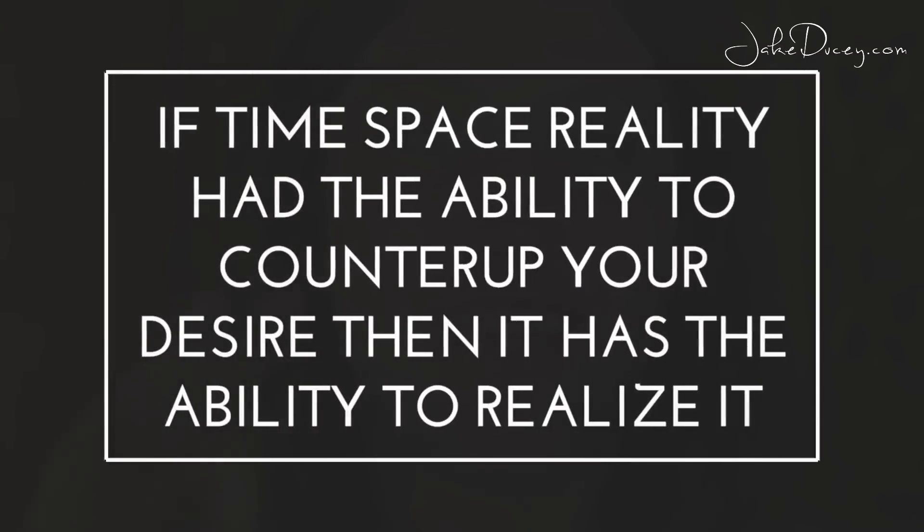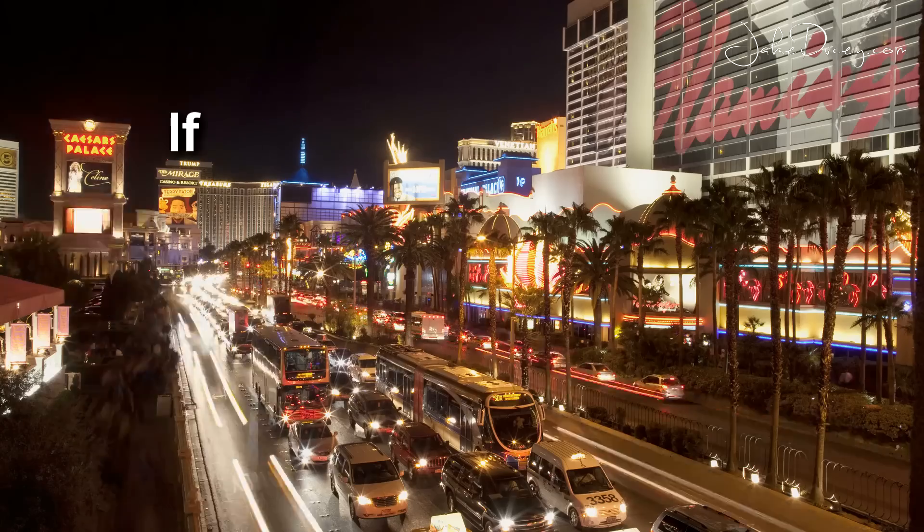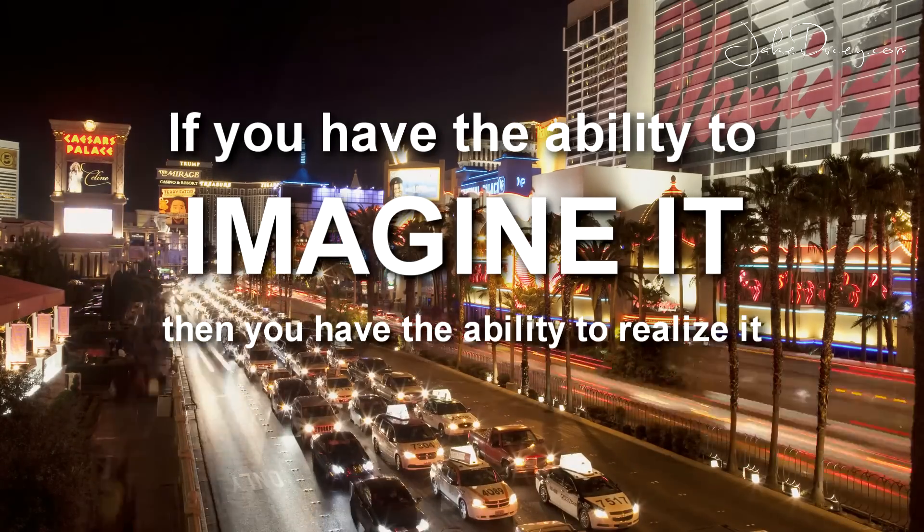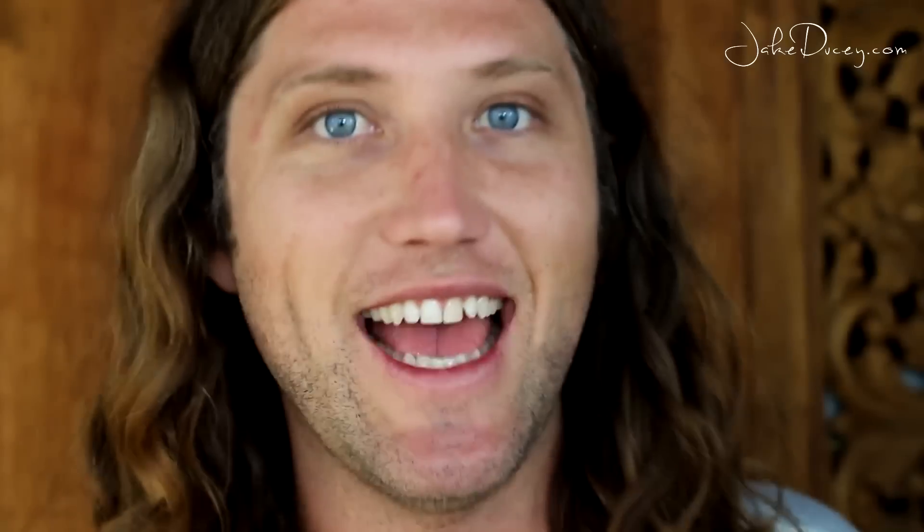Number three: if this time-space reality had the ability to conjure up a desire in you, then it has the ability to realize it. The seed doesn't exist without the ability to turn into a tree. The oak tree seed doesn't exist without the ability to turn into an oak tree. The seed of desire within you for your dream house, your soulmate, more money — Abraham tells us in Money and the Law of Attraction: if you have the ability to imagine it, then you have the ability to realize it. The basis of our entire universe is abundance. The only places there's really not abundance are things humans have created out of our egos. The universe in and of itself is totally abundant.